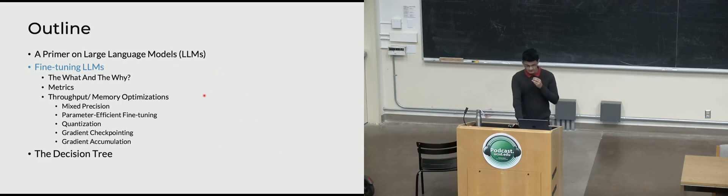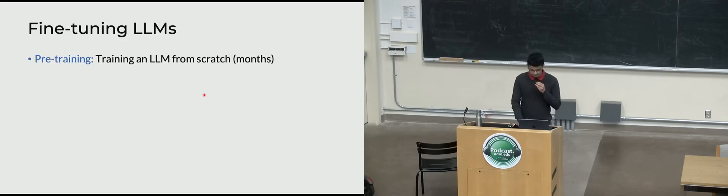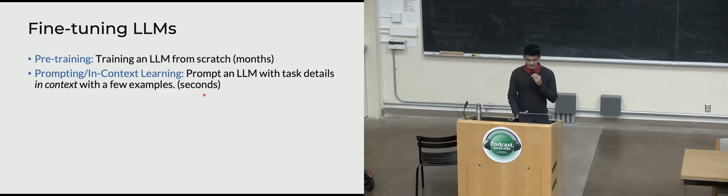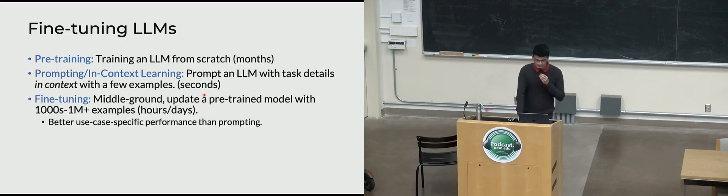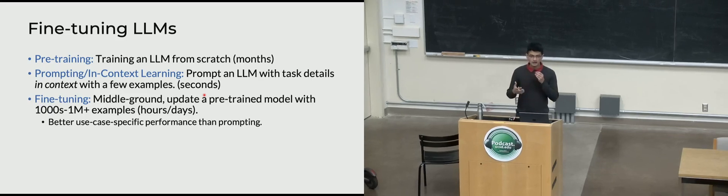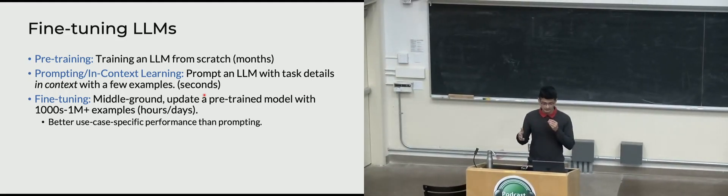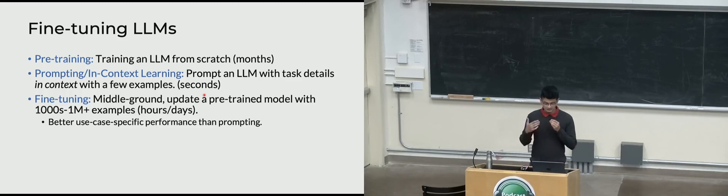Pre-training means training a language model from scratch — months in timeline, multiple nodes each with eight GPUs. Prompting and in-context learning involves feeding the language model a few demonstrations of your task, no parameter updates, happening in seconds. Fine-tuning is the middle ground: updating the pre-trained model with thousands or millions of examples, timeline of hours, days, or maybe weeks, mostly at small-scale multi-node. The benefit is you'll most likely get much better use-case-specific performance than in-context learning.